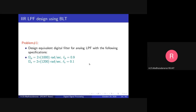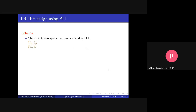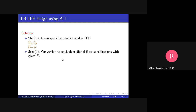Our target is to design the equivalent digital low pass filter that maps to these specifications. The sampling rate is fs = 8000 samples per second. We already know that small omega equals 2π × f / fs, or equivalently, small omega equals capital Omega divided by fs. So for the analog-to-digital frequency conversion: omega_p = 2π × fp / fs.